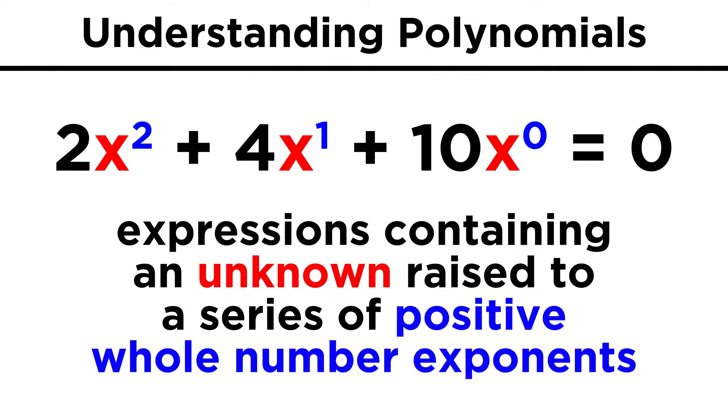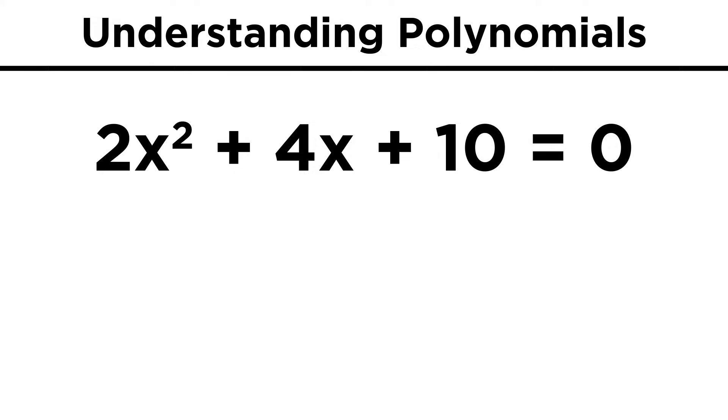These are called polynomials, and they are expressions that contain an unknown raised to various positive whole number exponents. This could be something like two x squared plus four x plus ten equals zero.